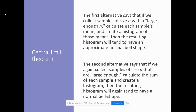The first alternative says: if we collect samples of size N with large enough Ns, we can calculate each sample's means and create a histogram of those means that results in a histogram that tends to have an approximate normal bell shape. What that means is I can take a ton of different samples, and within each of those individual samples, I'm going to find each of their means. So say I have a hundred different samples — that means I'm going to have a hundred different sample means — and those sample means are what I'm going to plot on a histogram, and when I do that, it's going to make a bell-shaped curve.